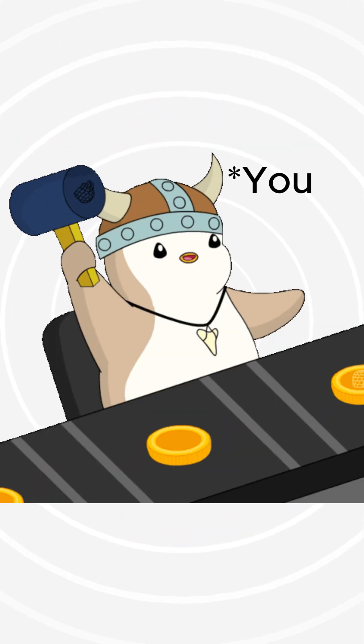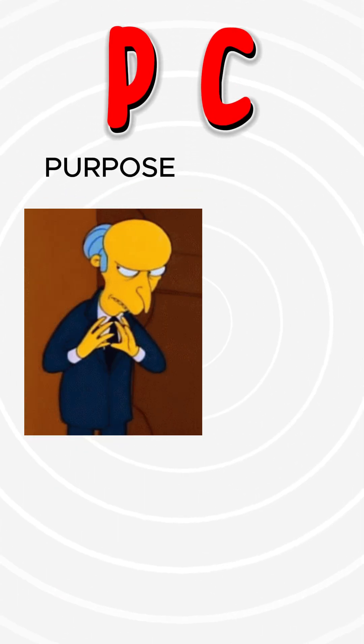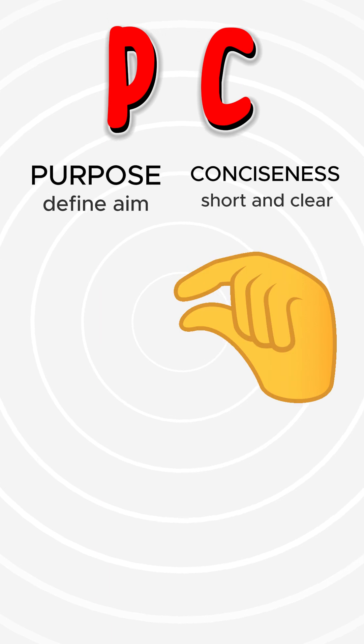Let's see the best way to name things in programming using the PC technique. P stands for purpose, clearly stating its intent, while C represents conciseness, ensuring the name is short and clear.